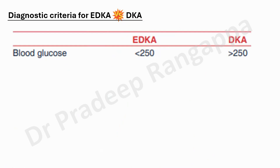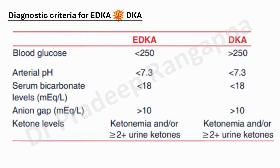When looking at diagnostic criteria for EDKA compared to DKA, there is not much difference. The criteria are very similar except that in DKA blood sugar is more than 250, while in EDKA it is less than 250. All other parameters are the same: pH less than 7.3, bicarbonate less than 18, anion gap more than 10, and ketone bodies present and equal to or greater than 2 in both.